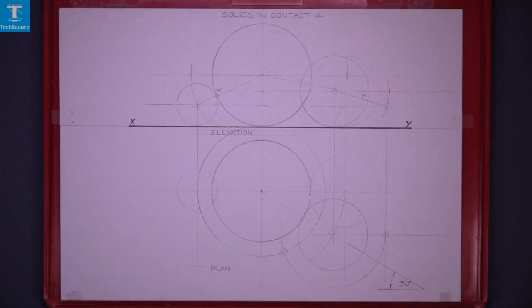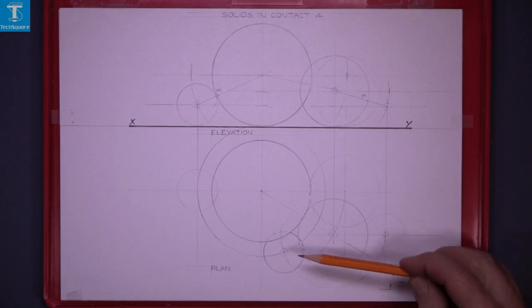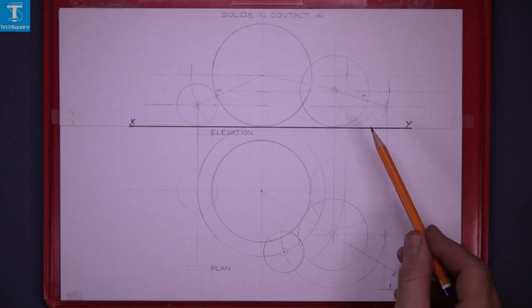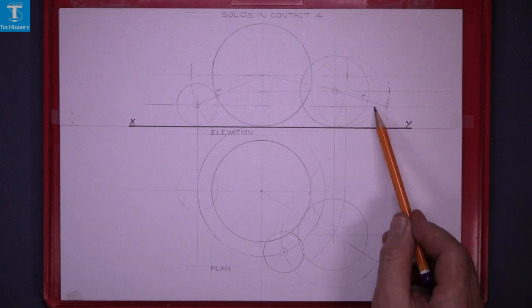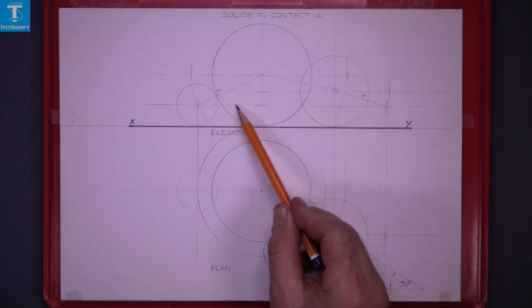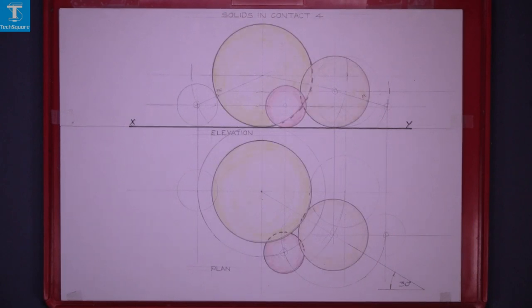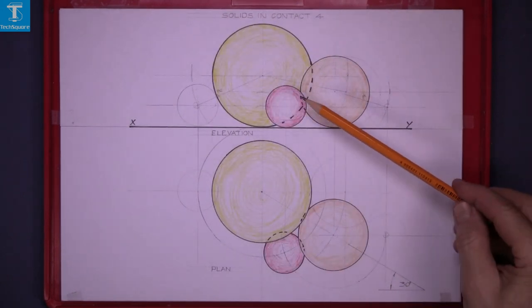Draw the sphere. Project up and horizontally across and that gets you the elevation of the small sphere. And that's a little bit of color added there now.